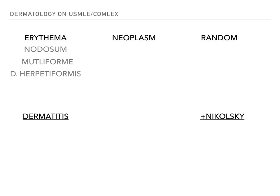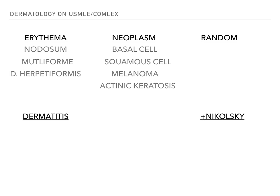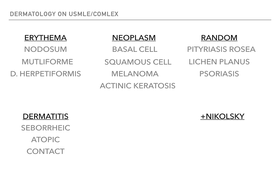In the erythema category, we're going to talk about erythema nodosum, erythema multiforme, and dermatitis herpetiformis. In the neoplasm category: basal cell carcinoma, squamous cell carcinoma, melanoma, and actinic keratosis. In my random category: pityriasis rosea, lichen planus, and psoriasis. In the dermatitis category: seborrheic dermatitis, atopic dermatitis, also known as allergic dermatitis, and contact dermatitis. And in my positive Nikolsky category: pemphigus vulgaris, Stevens-Johnson syndrome slash toxic epidermal necrolysis, and staphylococcal scalded skin syndrome, aka SSSS.